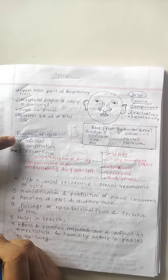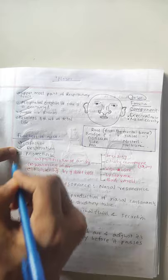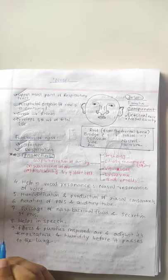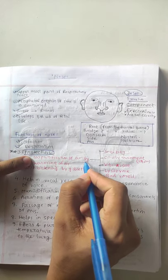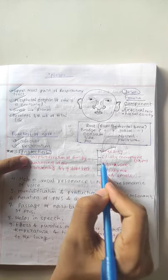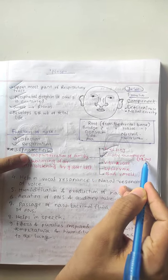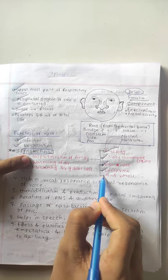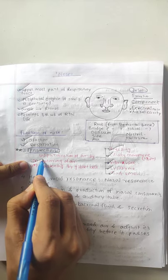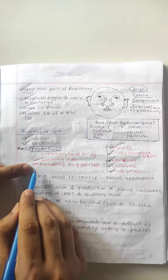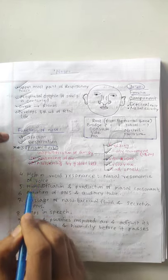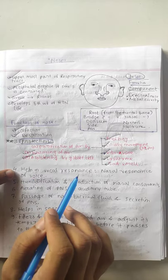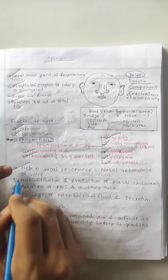Number two is respiration. Number three, the nose gives us protection. What is the protection? Number one is purification of air by sneezing. Number two is ciliary movement. Number three is vibrissae. Number four is lysozyme. Then warming of air in cold times, and moistening of air by the goblet cells. These are the protective functions.